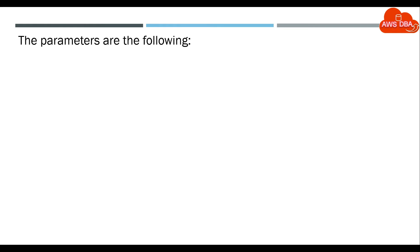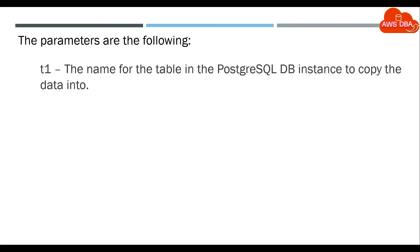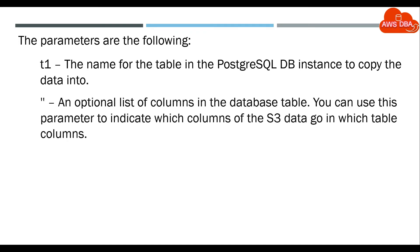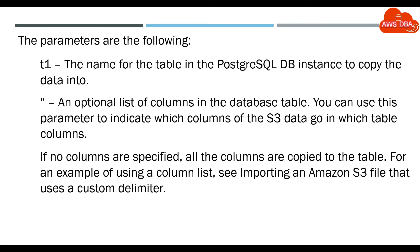The parameters are the following. T1 — the name for the table in the PostgreSQL DB instance to copy the data into. An optional list of columns in the database table. You can use this parameter to indicate which columns of the S3 data go in which table columns. If no columns are specified, all the columns are copied to the table. For an example of using a column list, see importing an Amazon S3 file that uses a custom delimiter.